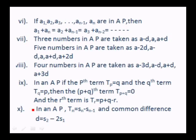If a1, a2, a3, ..., an are in AP, then a1 + an = a2 + a(n−1) = a3 + a(n−2), etc. That is, the sum of the first and last term equals the sum of the second and second-to-last, and so on. For example, in 1, 3, 5, 7: 1 + 7 = 8 and 3 + 5 = 8. This is a property of an AP.